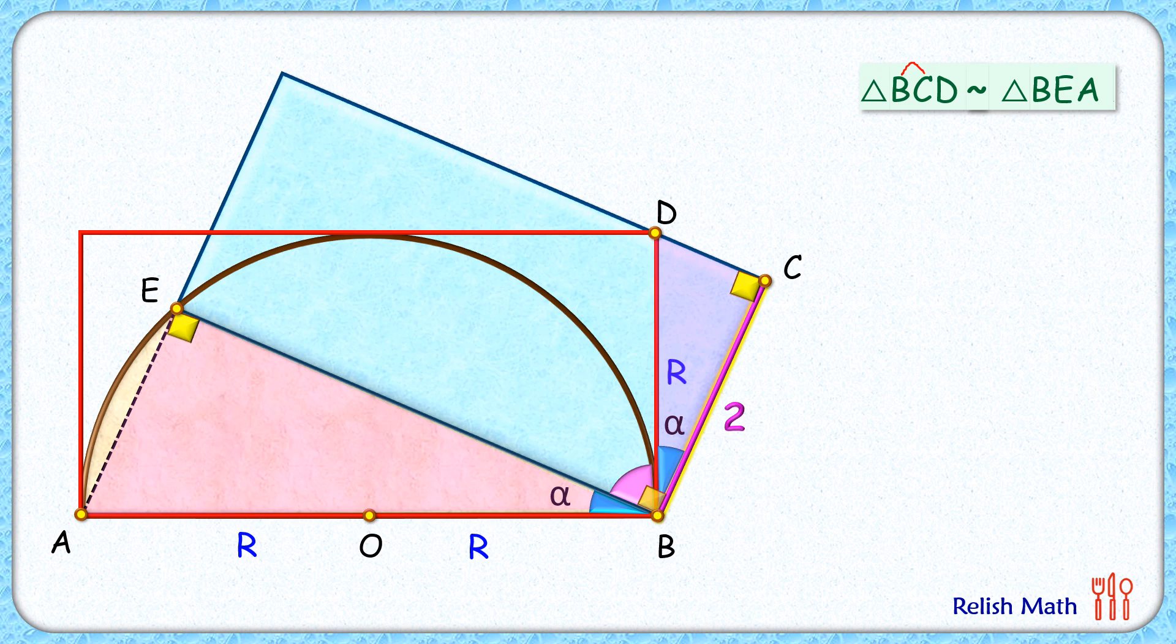So we can say that BC upon BD equals BE upon BA. Putting the values here, BC is 2 cm, BD is R, BE is what we are interested to find, and BA is the diameter of the semicircle and thus 2R.